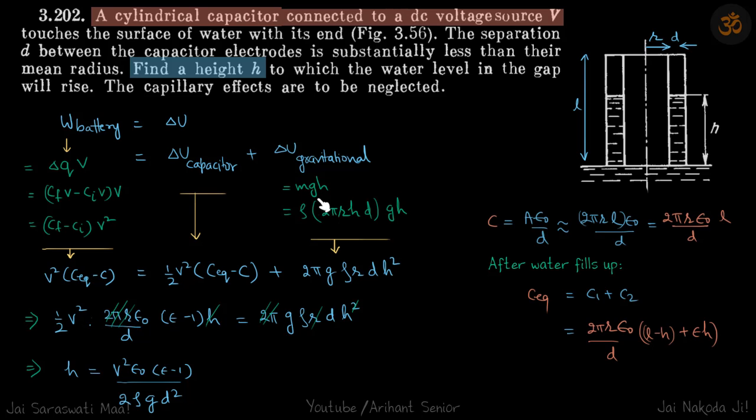Gravitational potential energy will be mgh, and m is rho into volume inside, and volume inside is 2 pi r h into d. The lateral surface area into thickness gives the volume of the liquid times rho, which is the mass of the liquid, into g h.